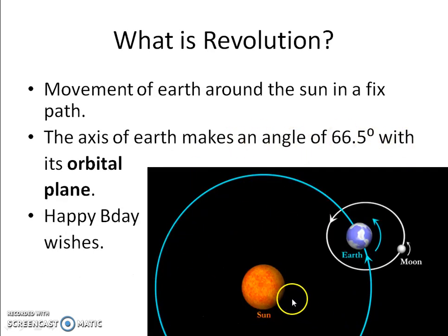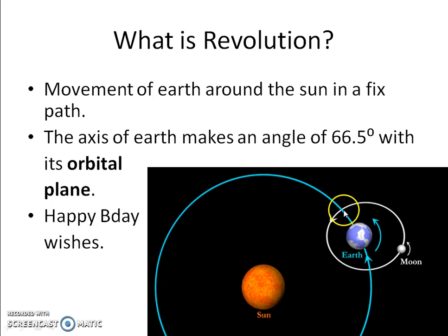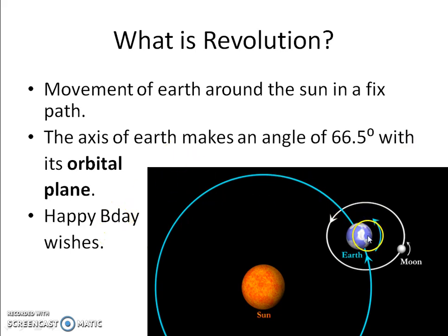What is revolution? The second thing is that on the globe you see in school or college, that globe is not straight — it's inclined. It's tilted at 66.5 degrees in relation to the orbit. So when you see the angle between the orbit and the axis, you get 66.5 degrees. Do remember — actually, do understand — this thing.